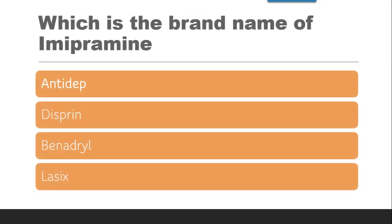Next question: Which is the brand name of imipramine? The options are Antidep, Dispreen, Benadryl, or Lasix. The correct answer is Antidep.